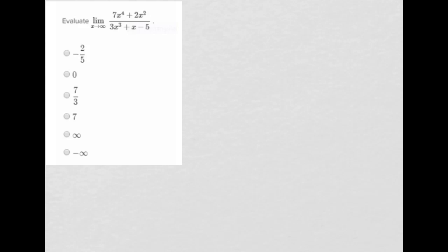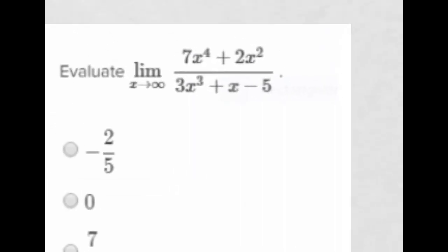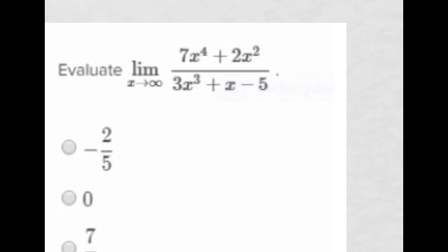The only other trick is to multiply by 1 over the highest power in the top and the bottom. The highest power is x to the third, so I can multiply by 1 over x to the third.